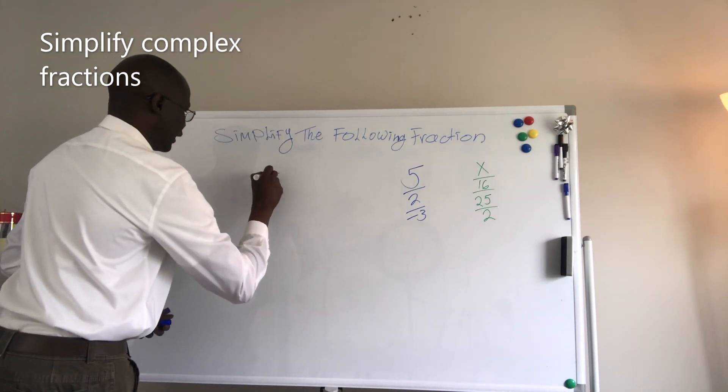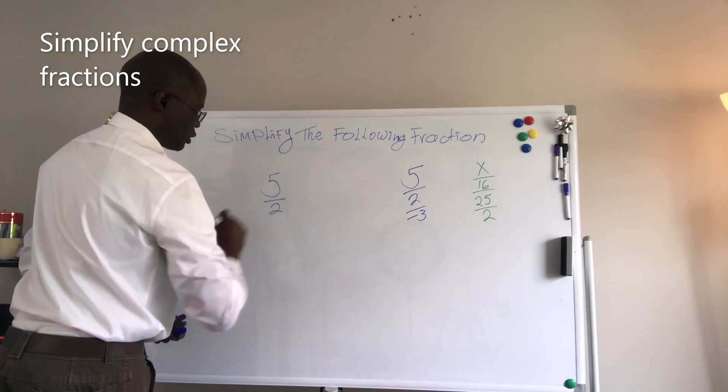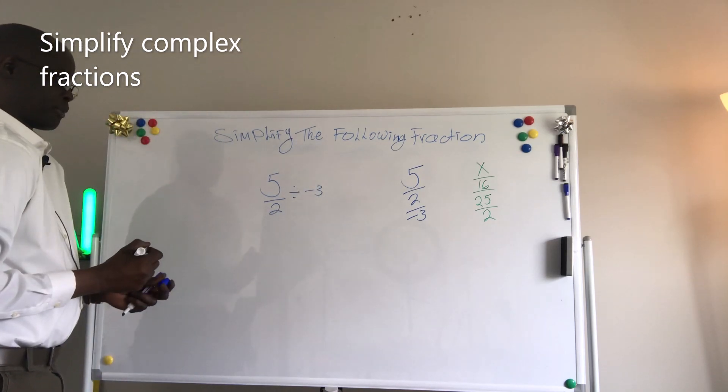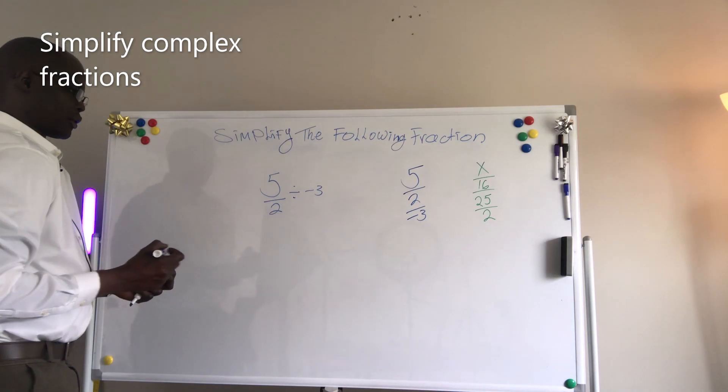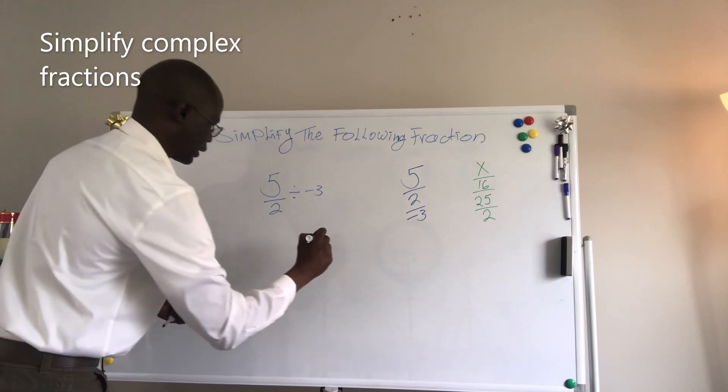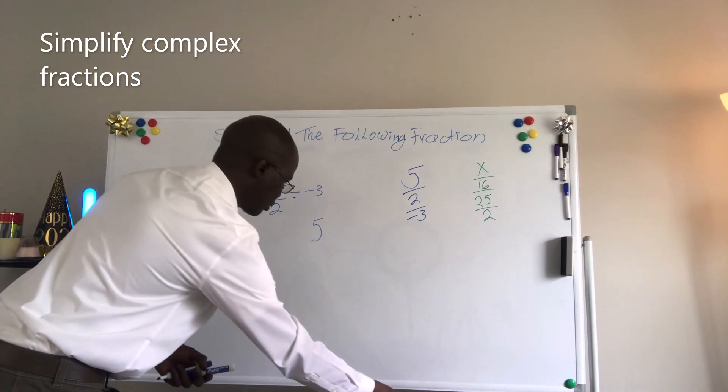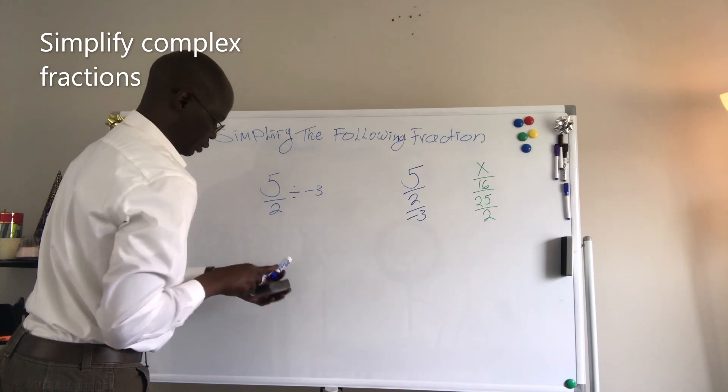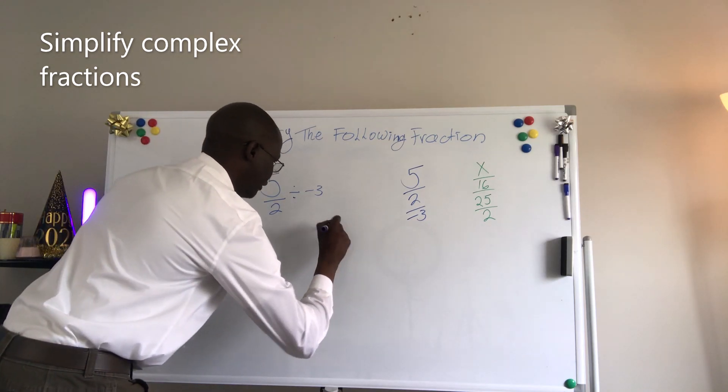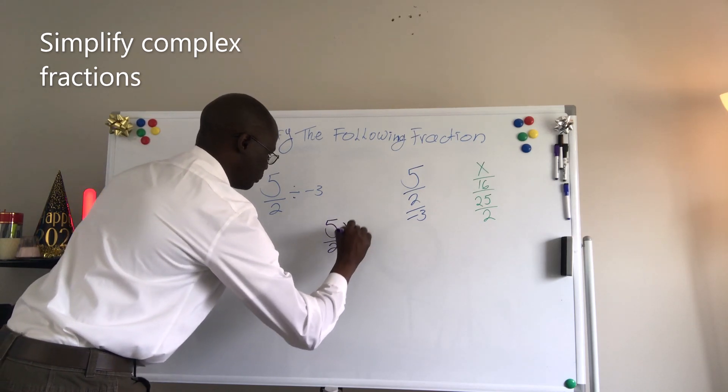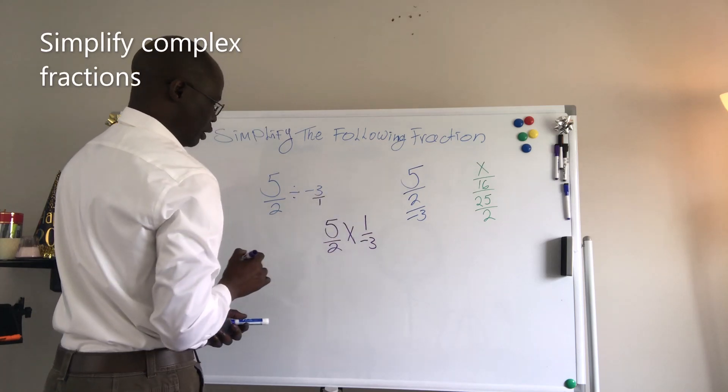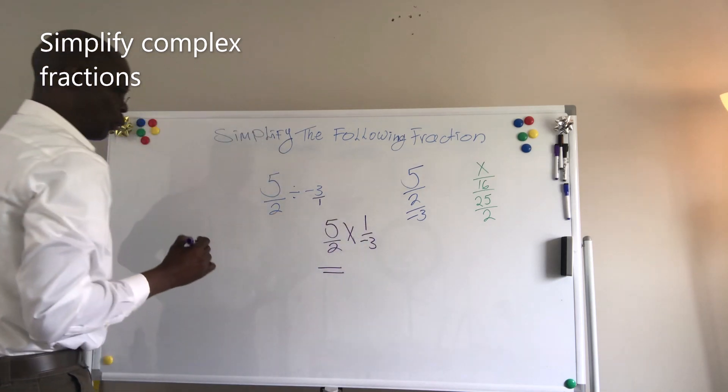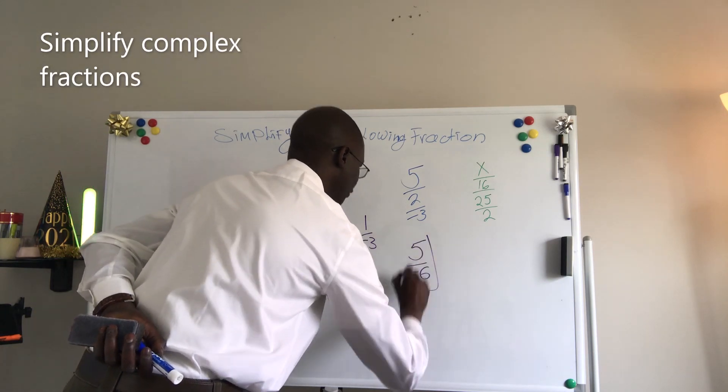The first one is 5 divided by 2, and the whole thing divided by minus 3. Take a look. As we said, it will be 5. We say we have 5 divided by 2 times, we have multiplication. And that will be 5 times 1 is 5, and then 6.